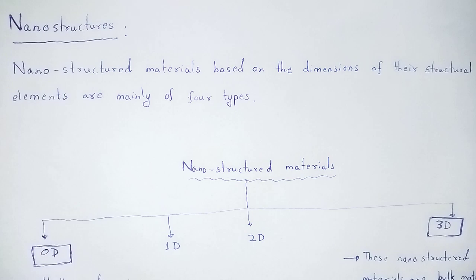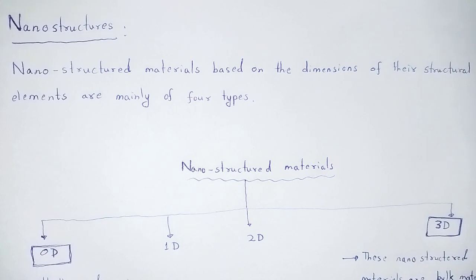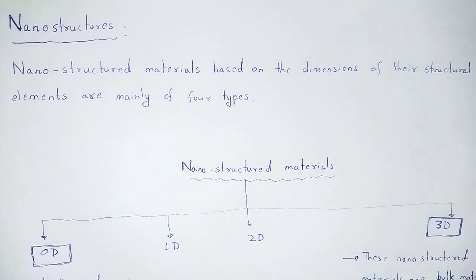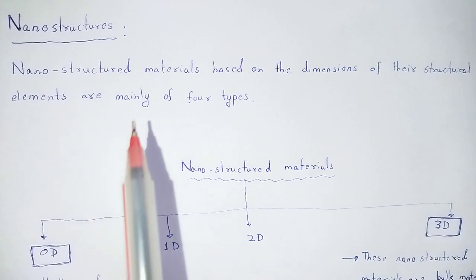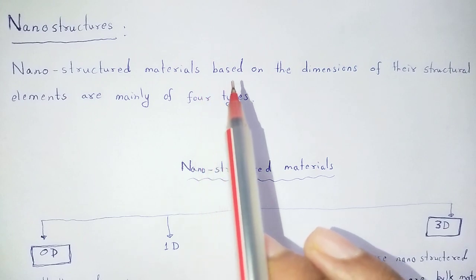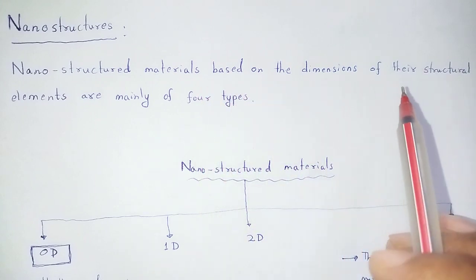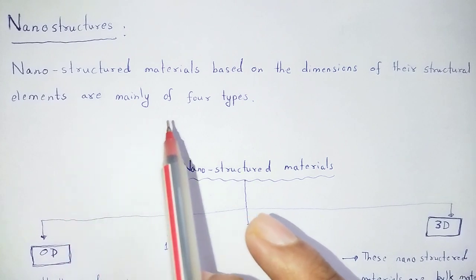Let's begin. We are going to talk about nanoscience. Nanostructured materials, based on the dimensions of their structural elements, are mainly of four types.